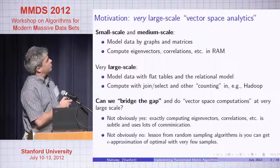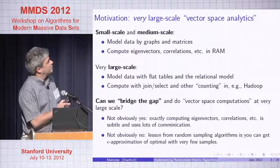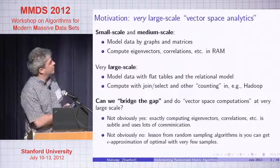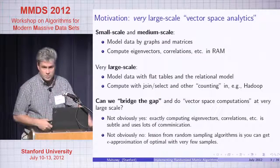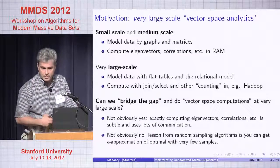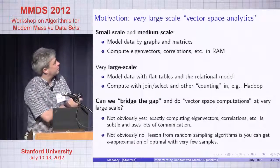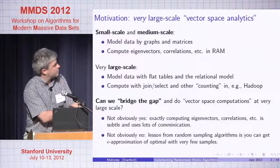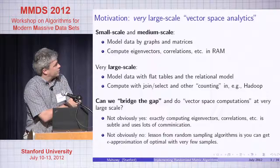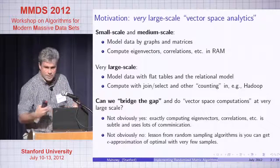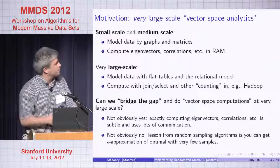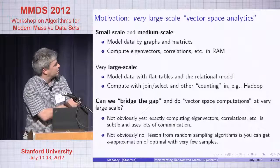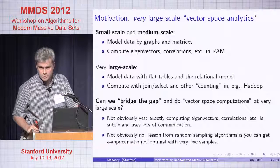The high-level motivation: at small or medium scale, data are often modeled by graphs and matrices, and you need to compute eigenvectors and correlations — relatively straightforward in RAM. At very large scale, it's much more common to model data with flat tables and the relational model, doing computing with joins, selections, and counting measures more traditional in databases, such as in Hadoop. The question is: can we bridge this gap and do vector space analytics at very large scale?